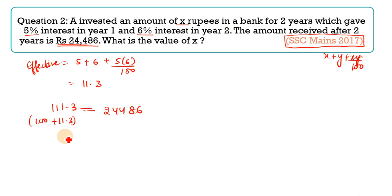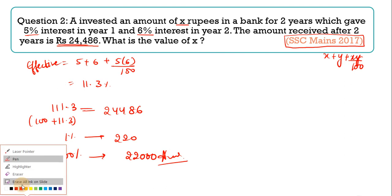Now I know that my principle is 100, we always take 100. So I will add this to 100. So this comes to 100 plus 11.3, that is 111.3. He has given you the amount, that is 24,486. Now simplify it. 1% value will be 220. I have to find 100%, because principle was 100%. That is 22,000 and this is your answer. So we are done with this question and this is our answer.